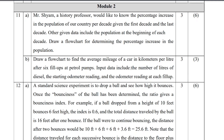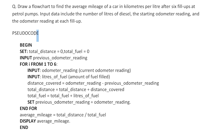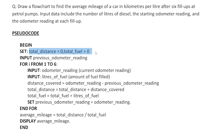We use a for loop or while loop. Initialize the variables: total distance and total fuel. I'm going to use pseudocode here. Begin — then set initial variables: total distance equals zero and total fuel equals zero.